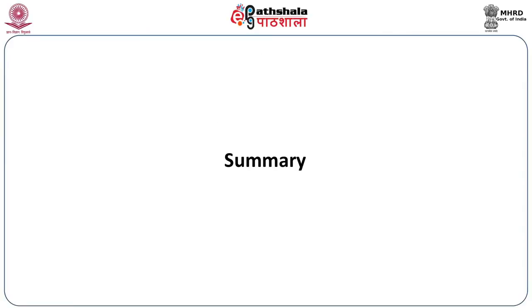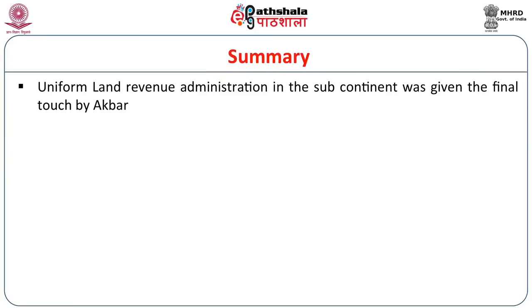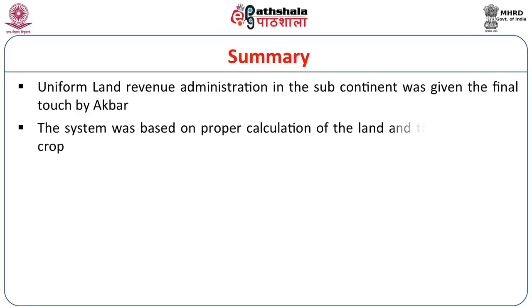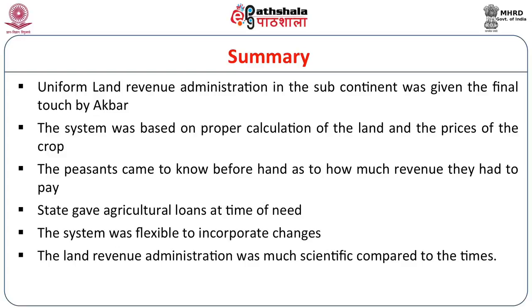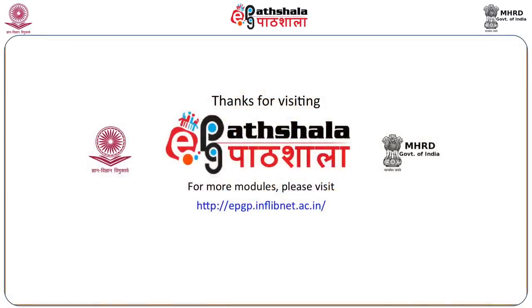To summarize: the Mughal Land Revenue Administration gave a uniform land revenue system a final shape in the subcontinent. The system was based on proper calculation of land and the prices of crops. The peasants came to know beforehand how much revenue they had to pay. The state gave agricultural loans in times of need. The system was flexible to incorporate changes, and the land revenue administration was much more scientific compared to its time. Thank you for your patient hearing and you can go back to the e-text for further reading.